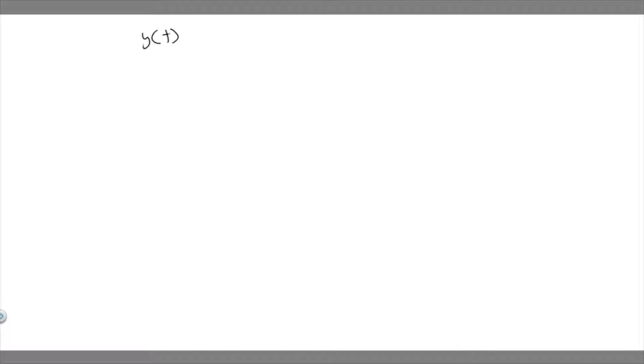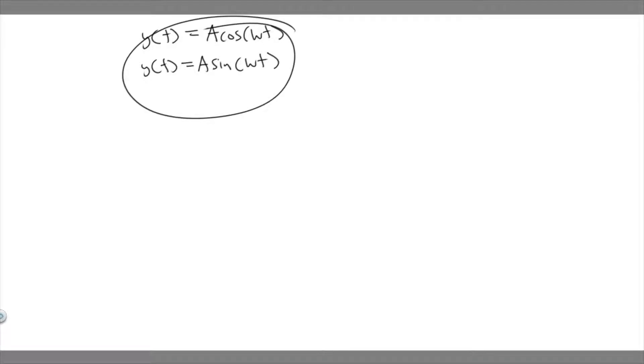In order to solve this problem, you need to know the equations that describe motion for something going in simple harmonic motion. So these equations are both going to be y of t. One is going to be A times the cosine of omega t, and the other one is going to be A times the sine of omega t. We're only going to use one of them — I'll show you which one and why in a second.